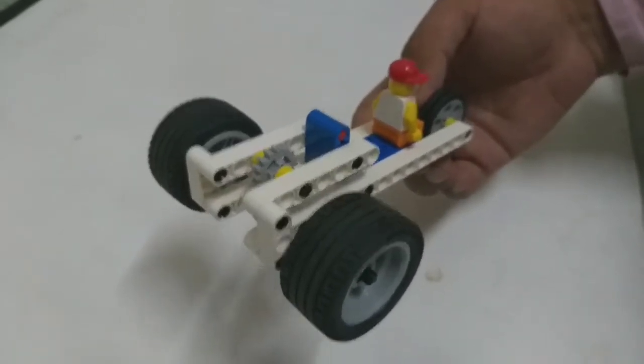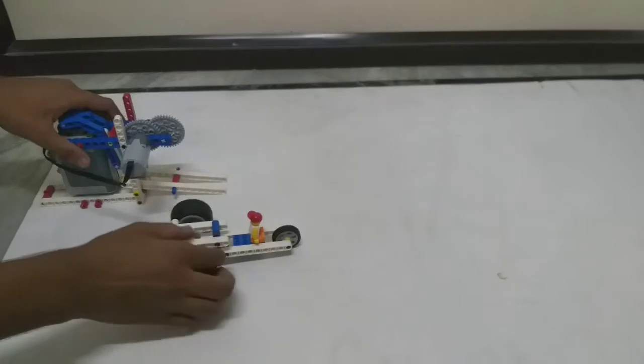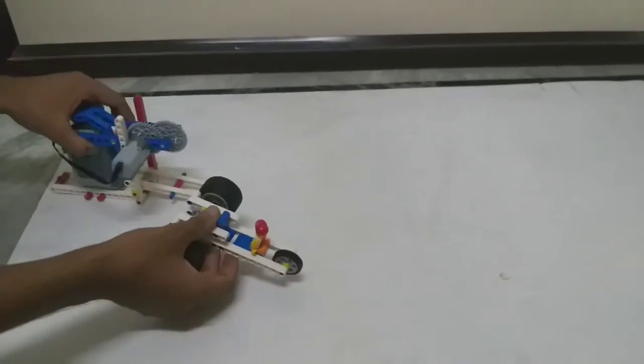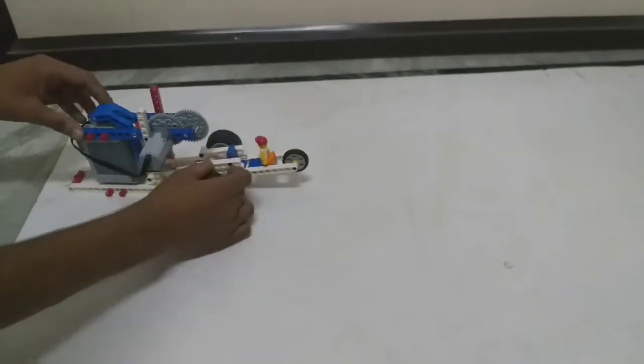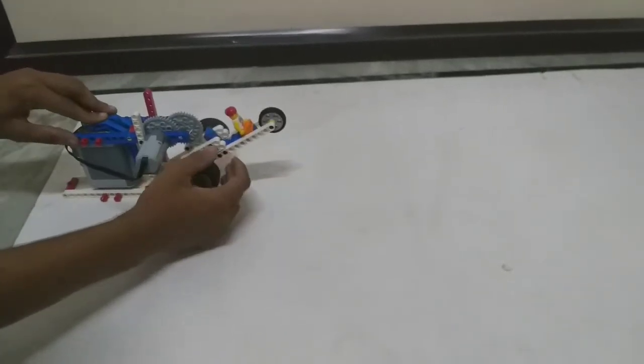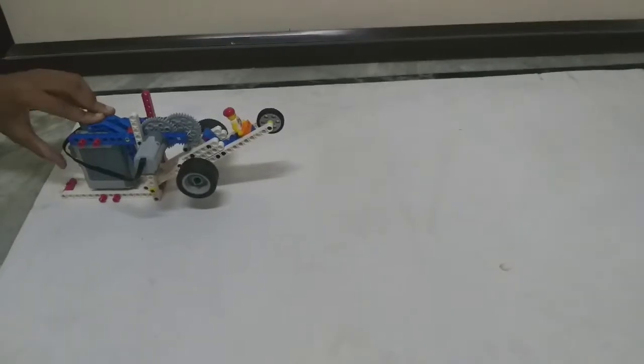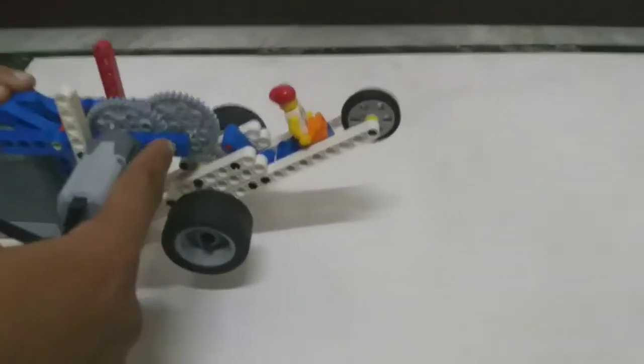Now we'll see how the car launches through the car launcher. The car is inserted into the launcher, and now the gear on the car is matching with the 40-tooth gear. You can see the close-up view.